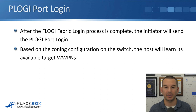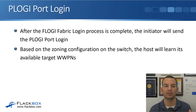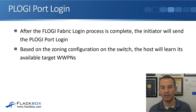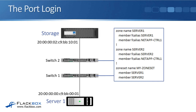After the FLOGI fabric login process is complete, the initiator will send the PLOGI, which is the port login. Based on the zoning configuration on the switch, the host will learn its available target WWPNs. Server 1 sends the port login to switch 1. Switch 1 can see in the zoning information that server 1 is allowed to connect to the storage system, and then switch 1 will tell server 1 that.